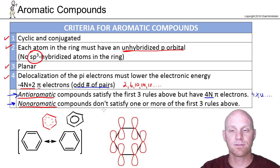So, again, fail one of the first three rules, non-aromatic, but pass the first three rules, then you just count the electrons. Is it a 4n plus 2 number? It's aromatic. If it's a 4n number, it's anti-aromatic. Let's go through a number of examples here.